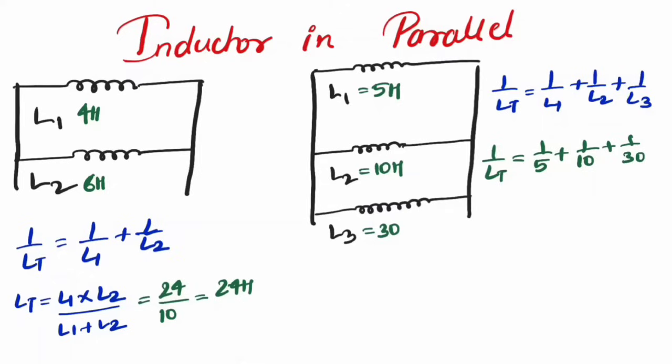And if you want to solve this, let's take the LCM as 30. I will multiply by 6, divide by 6, multiply by 3, divide by 3. Now my total inductance would be 6 plus 3 plus 1 upon 30. 1 upon Lt would be 6 plus 3 plus 1 is 10 by 30. It turns out to be 1 by 3. My total inductance would be 3.